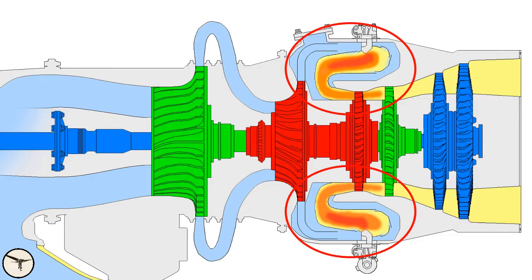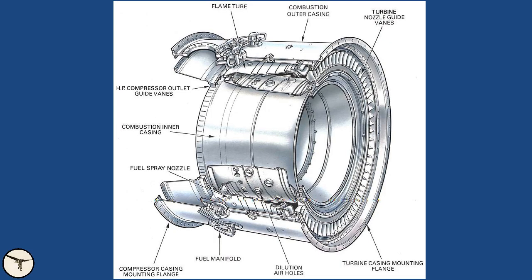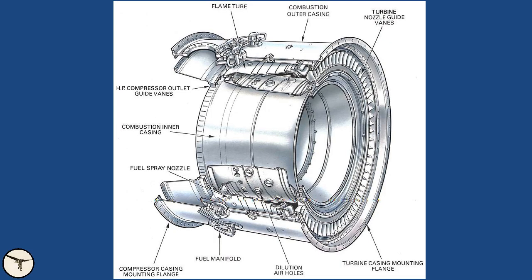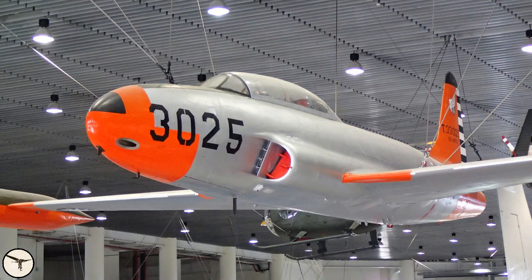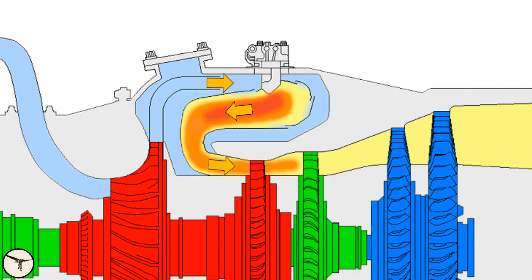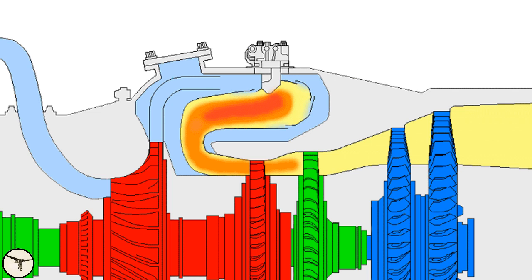The engine has an annular reverse flow combustion chamber. An annular chamber is shaped like a doughnut. Earlier engines had tubular combustion chambers, like the General Electric J-33 used in the Lockheed T-33 Shooting Star. The benefit of an annular combustion chamber is that it provides a more even heat distribution to the turbine inlet. Reverse flow means that the air flows in an S-shaped pattern, making the combustion chamber more compact. The combustion chamber has two walls — the inner wall has a ceramic coating, and cooling is provided by bleed air which flows between the walls.